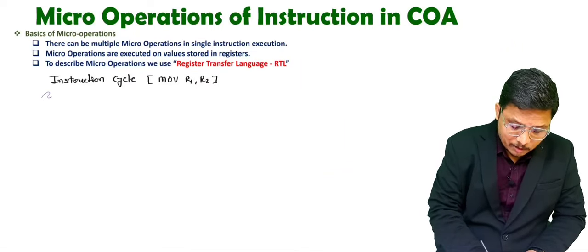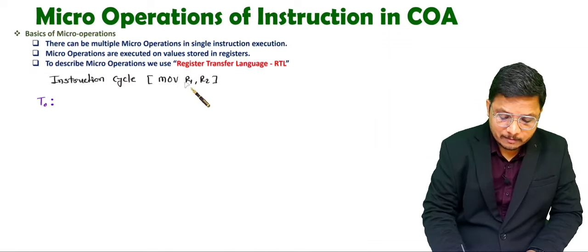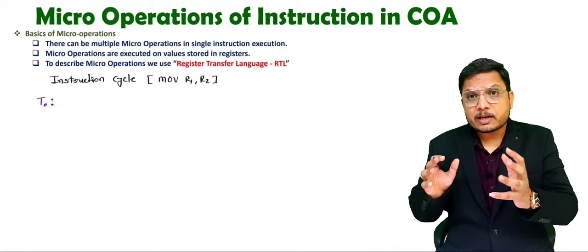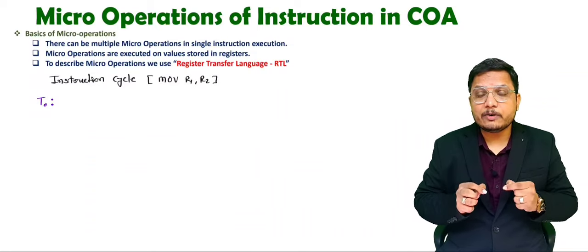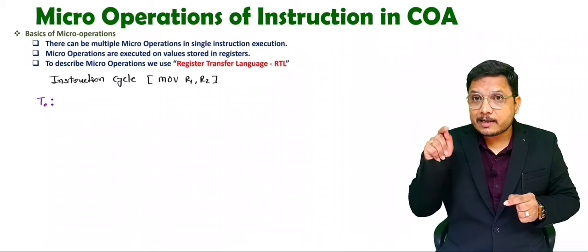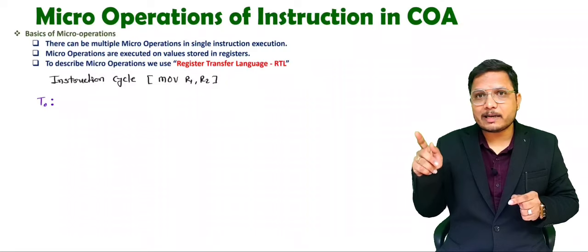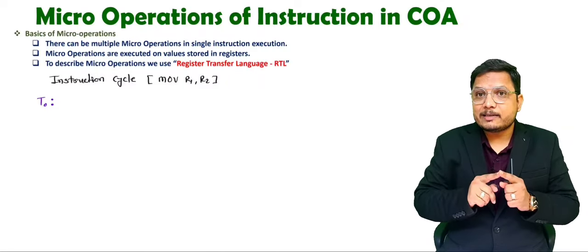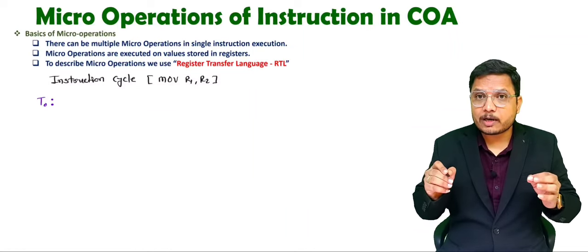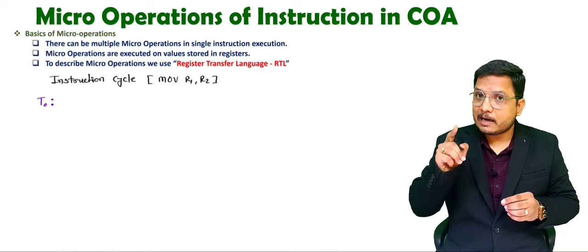Let us consider T0 time. During T0 time, we need to take this instruction from memory inside the CPU. To take an instruction from memory inside the CPU, first of all we need to provide the address of memory. Now the address of that instruction will be there with the program counter. But the program counter is not connected with memory — the address register, AR, is connected with memory.